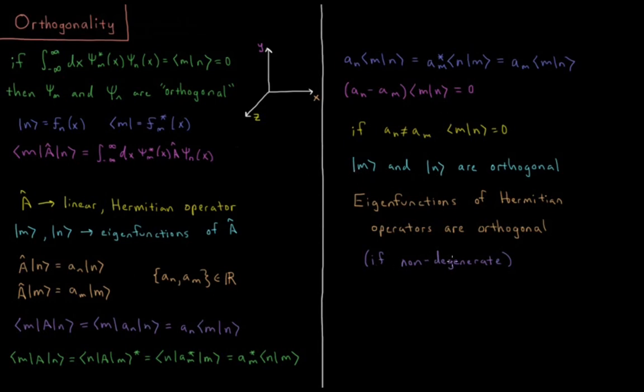And even if they are degenerate, even if they do equal one another in their energies, we can still always find a way to set them to be orthogonal to one another. So using the fact that the eigenfunctions of our Hamiltonian, which is a Hermitian operator, are orthogonal to each other, we're going to be able to derive a lot of useful results in the coming chapters.